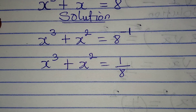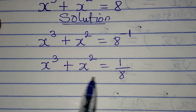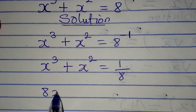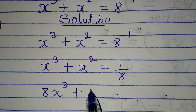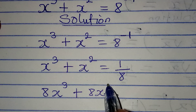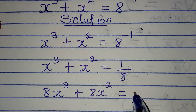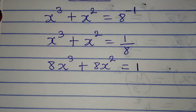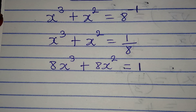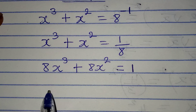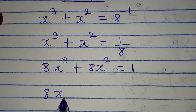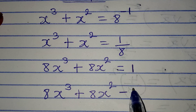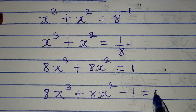The next thing I'm going to do is multiply all through by the LCM which is 8. So I'm going to have 8x³ plus 8x² equals 1, because 8 will clear itself from the right. Then I'll bring everything to the left so that I have 8x³ plus 8x² minus 1 equals 0.